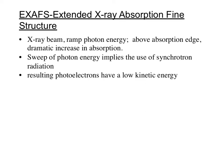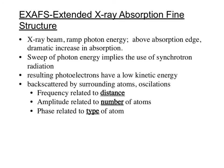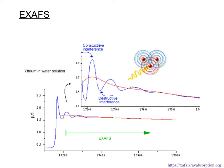The resulting photoelectrons — and this is the important part of X-AFS — once ejected from the core into the continuum, they are 'barely moving,' having relatively low kinetic energy. That allows us to get additional information through backscattering based on the distance, number, and type of nearby atoms. Much like X-ray crystallography, we can learn quite a bit about the exact nearest coordination environment of the metal ion. This is shown for yttrium in water, where the ejected electron undergoes constructive and destructive interference based on nearby molecules.